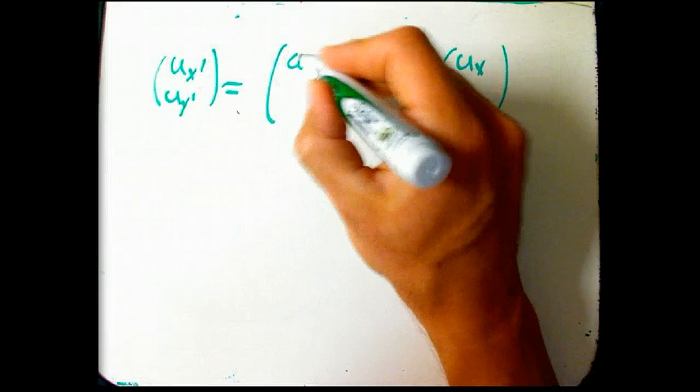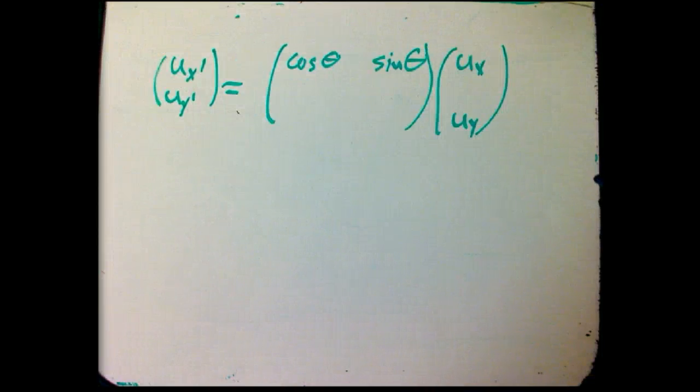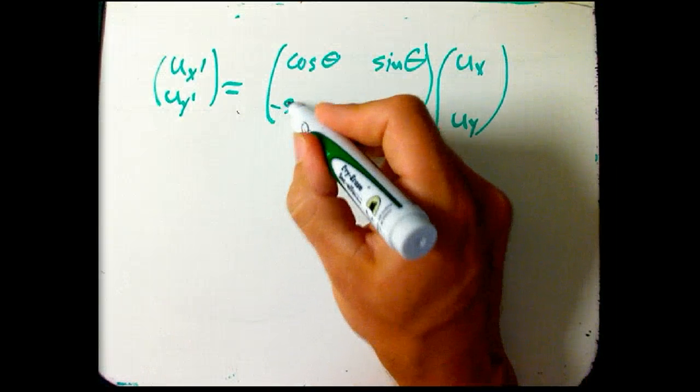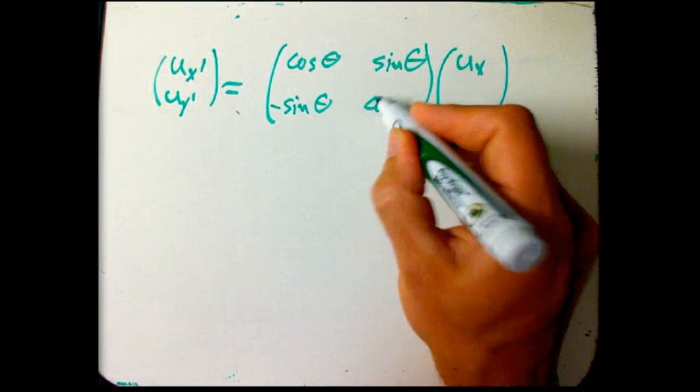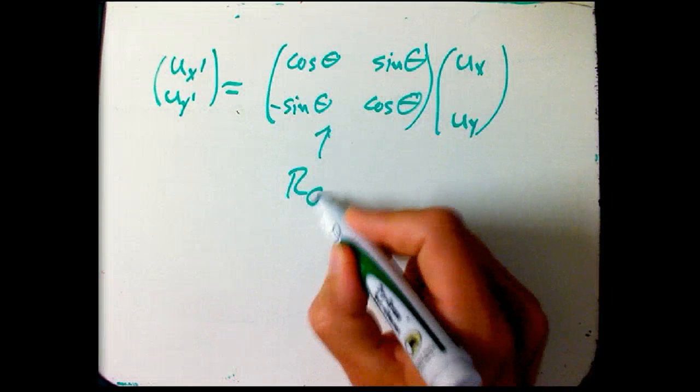So, the UX prime, that was where it was just cosine theta, sine theta. And the UY prime, it was minus sine theta, cosine theta. And so, I'm going to call that the rotation matrix by angle theta.